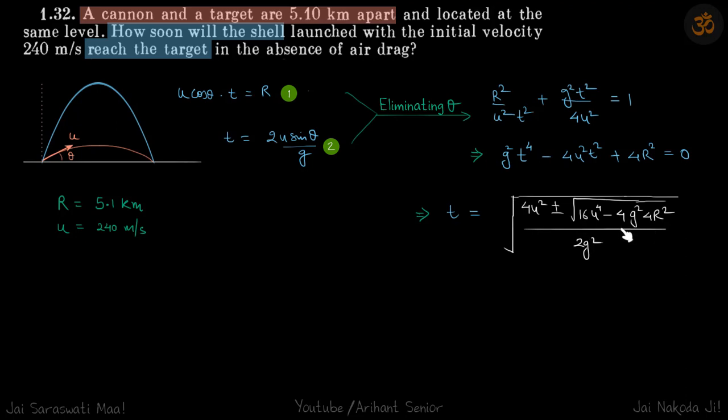So this is the variable form. In numerical form, you can check with the answer at the back of the book. Important thing here is we found two times. One time is for this path and one time is for this path. Quite obviously the longer time will be for this path and shorter time will be for this path.